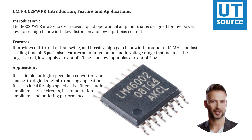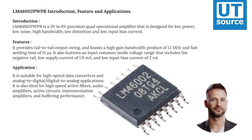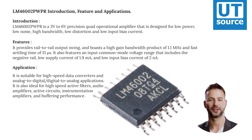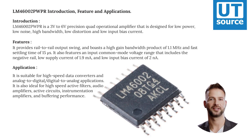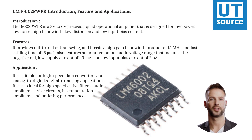low noise, high bandwidth, low distortion, and low input bias current. It provides rail-to-rail output swing and boasts a high gain bandwidth product of 1.1 mHz and fast settling time of 15 ms. It also features an input common mode voltage range that includes the negative rail, low supply current of 1.9 mHz, and low input bias current of 2 mHz.